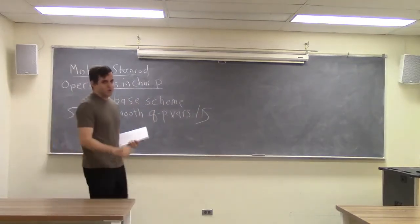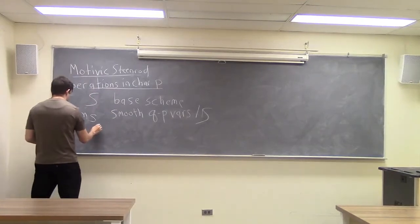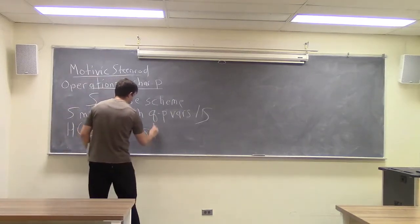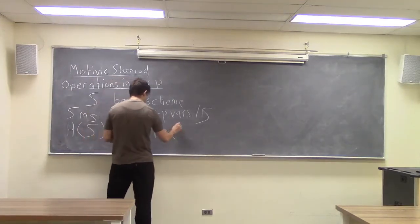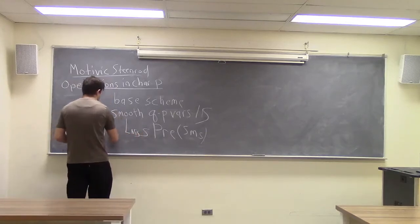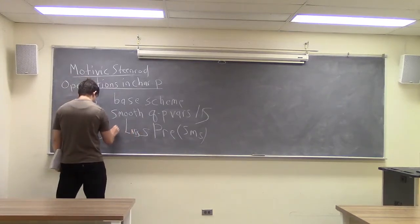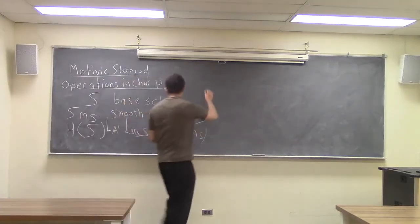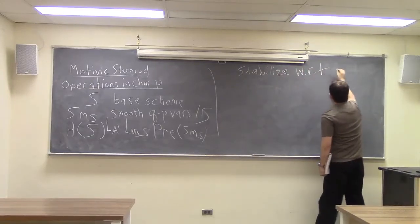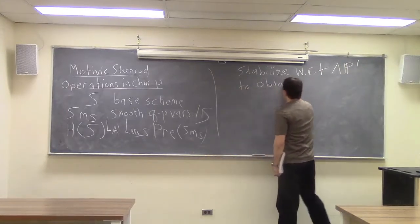Then we can consider two important categories. The first is the motivic homotopy category of S, which is obtained by taking simplicial presheaves on smooth schemes over S, then localizing with respect to the Nisnevich topology, and enforcing the condition that the affine line should behave as the unit interval. From there we can stabilize by smashing with P1 to obtain the motivic stable homotopy category.